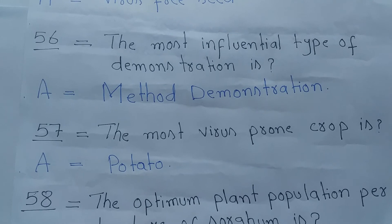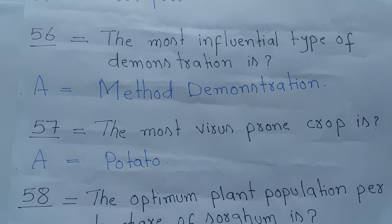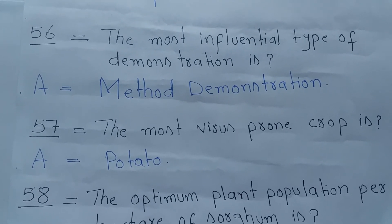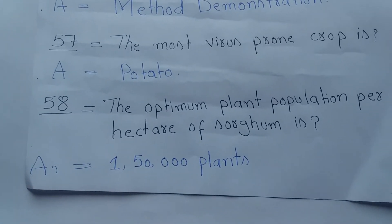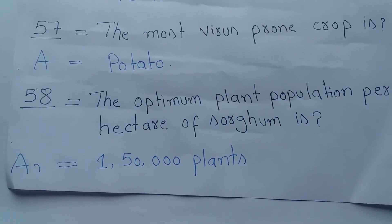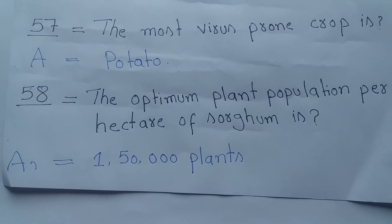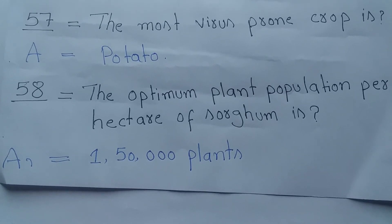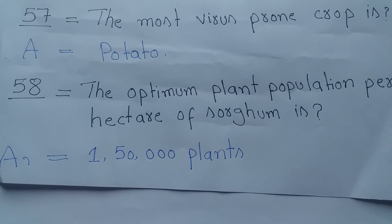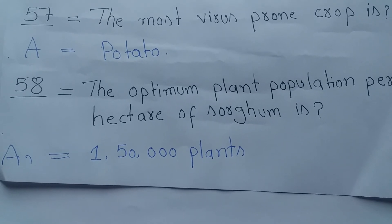Question number 57: The most virus-prone crop? Answer is Potatoes. Question number 58: The optimum plant population per hectare of sorghum is? Answer is 150,000 plants.